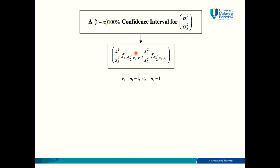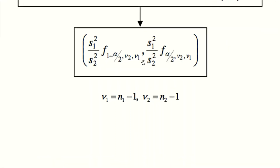This is how the formula looks like. In this formula, you have the lower limit and the upper limit of the confidence interval. In each limit, you have to find the sample variance for both population 1 and population 2. Please take note that the critical value for the lower limit is different from the upper limit. In the lower limit you have 1 minus alpha over 2, but in the upper limit it's only alpha over 2. The critical value comes from the F distribution table — it's no longer the Z table, T table, or chi-square table, but the F distribution table, which I will show you later.